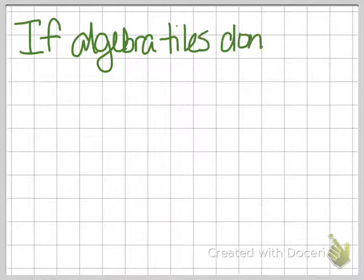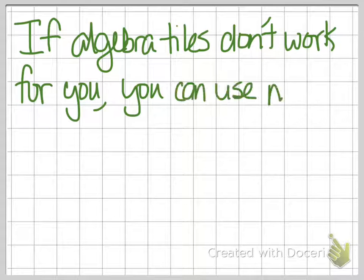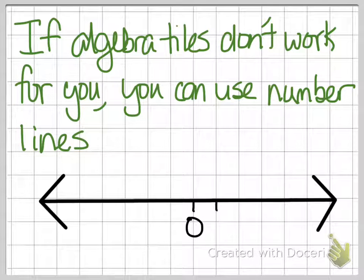Now, if the algebra tile method of visualizing doesn't work for you, we can transition and look at number lines.